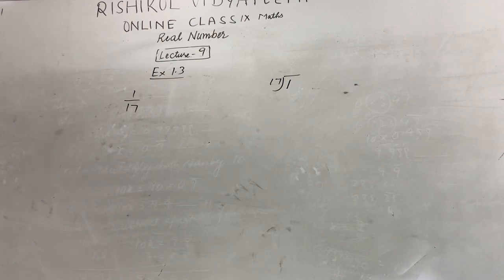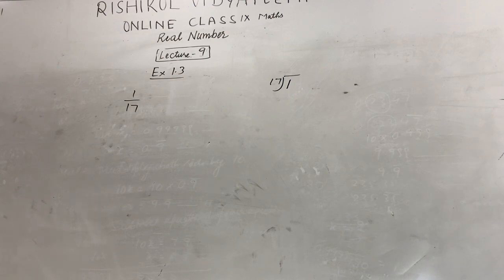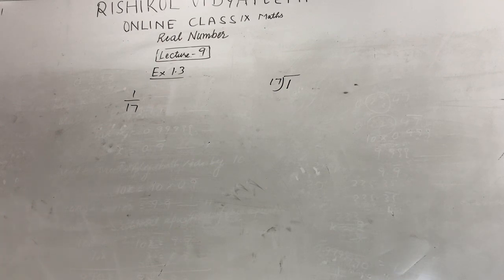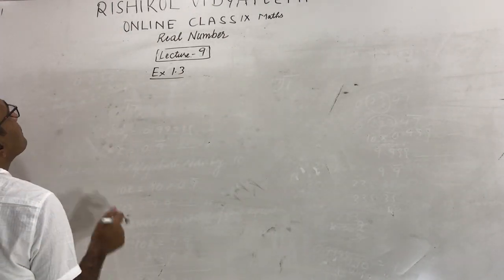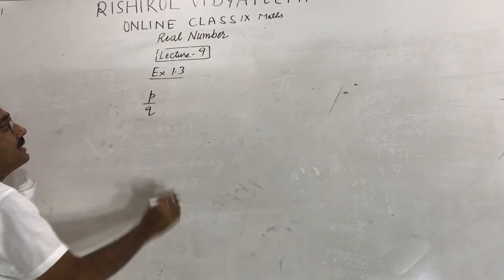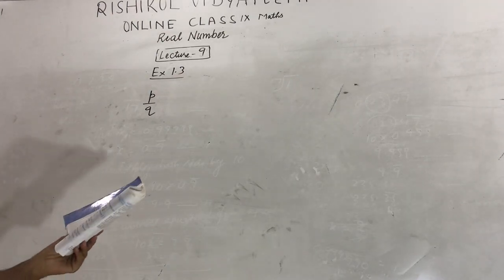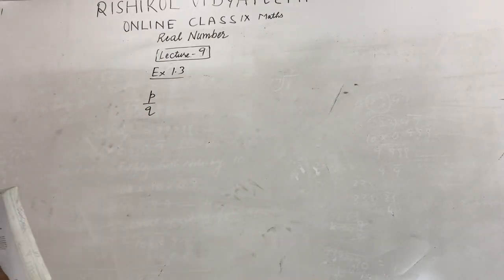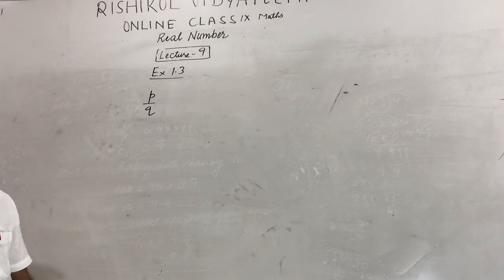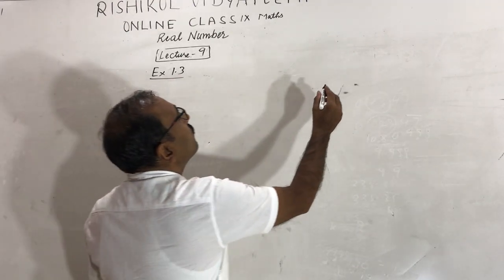Next, question number 6: look at several examples of rational numbers p upon q where p and q are integers with no common factor other than 1, having a terminating decimal representation. Can you guess what property q must satisfy? When p and q are co-prime — meaning they have no common factor except 1 — for example 2 and 3 are co-prime. But 6 and 24 are not co-prime because 6 is a common factor of both.